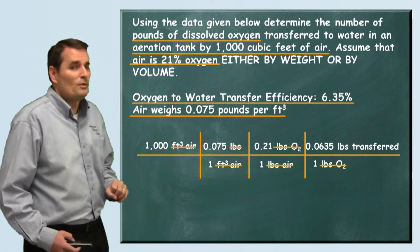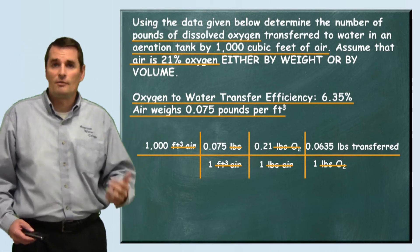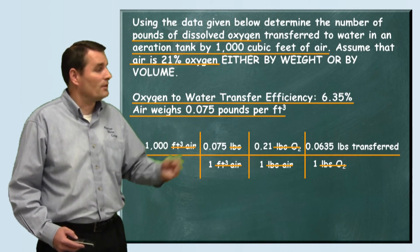Now all we have to do is the math. When we multiply across everything on the top, that 1,000 times 0.75 times the 0.21, which is the percent of oxygen in air, and times the transfer efficiency...